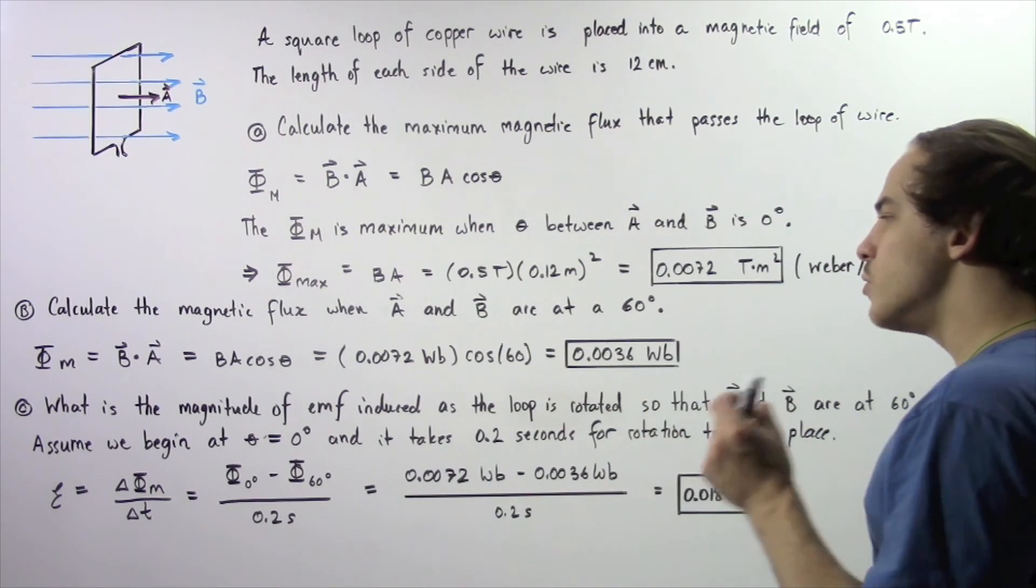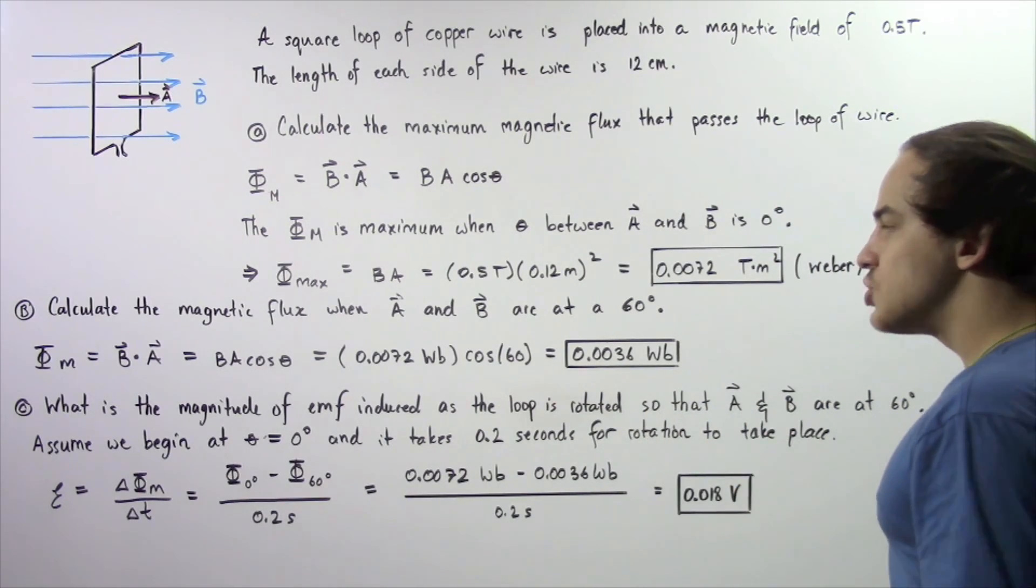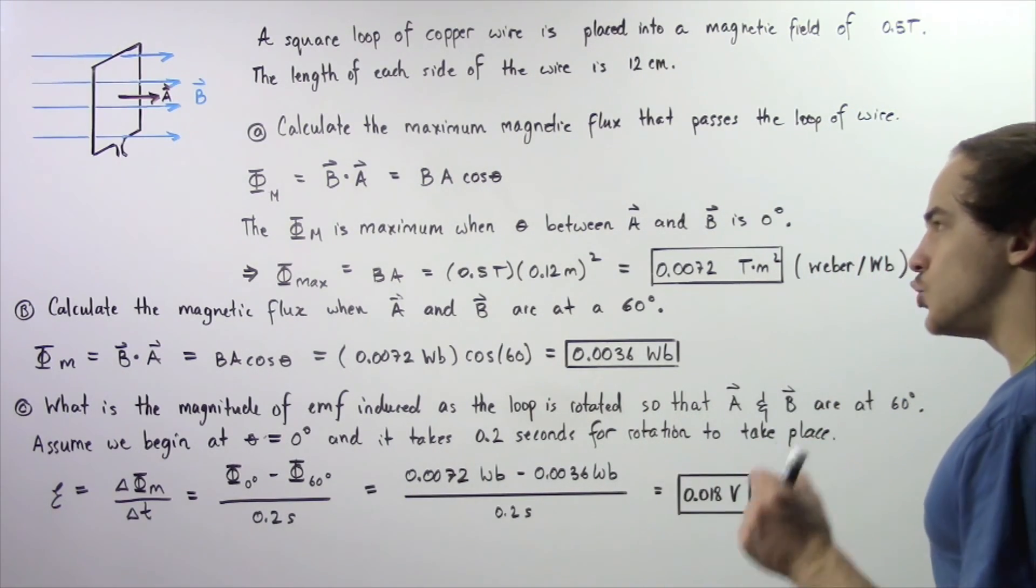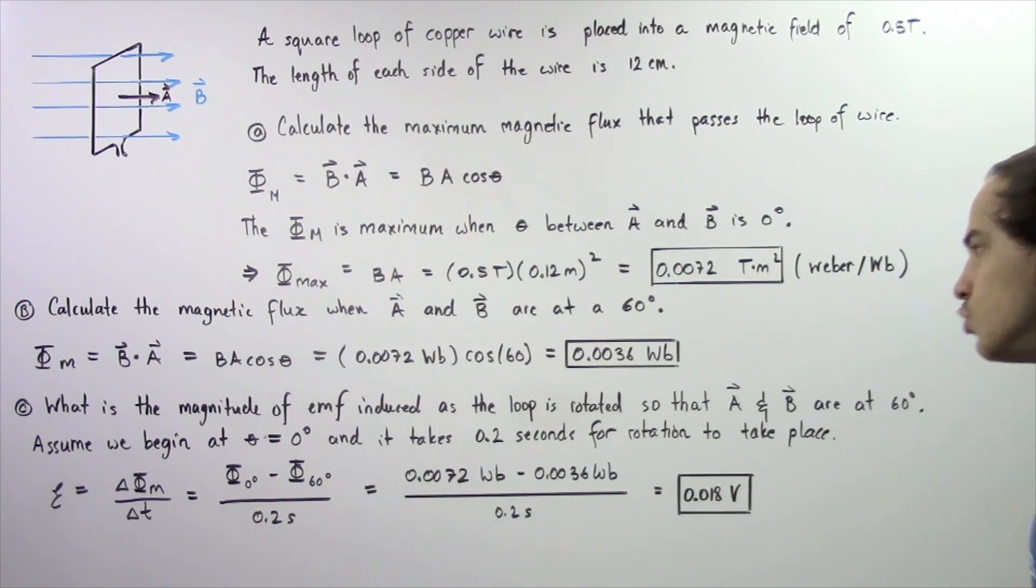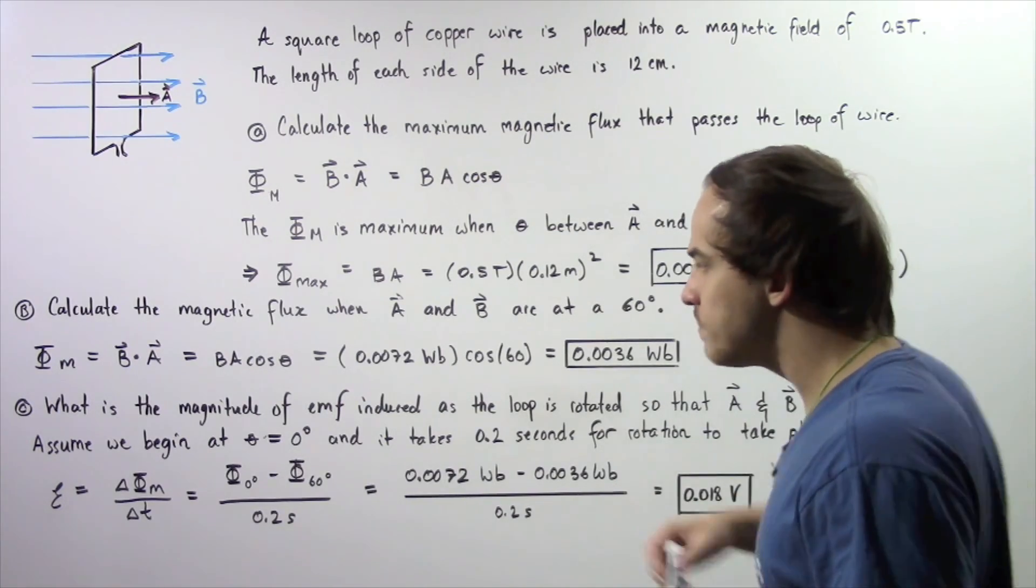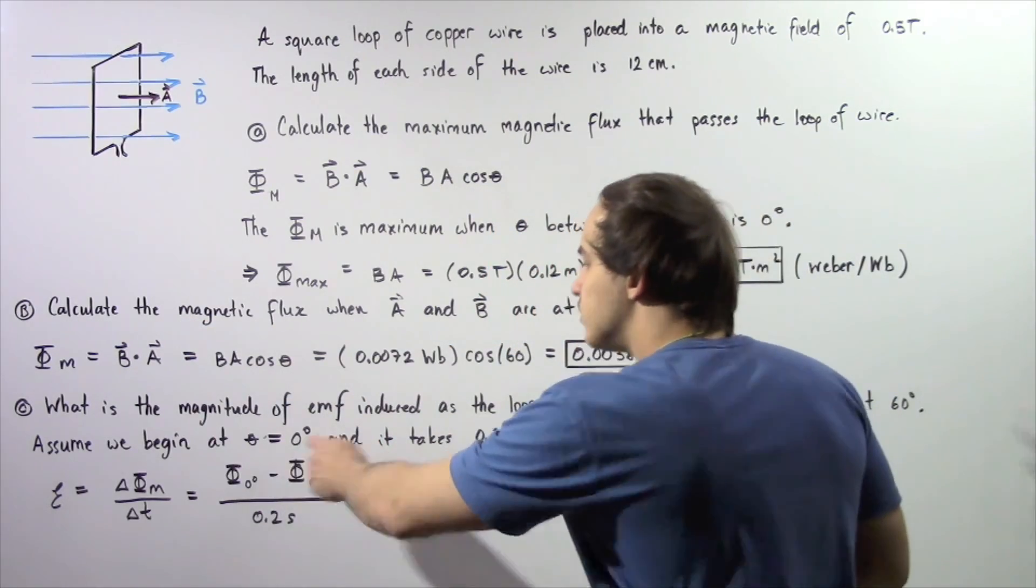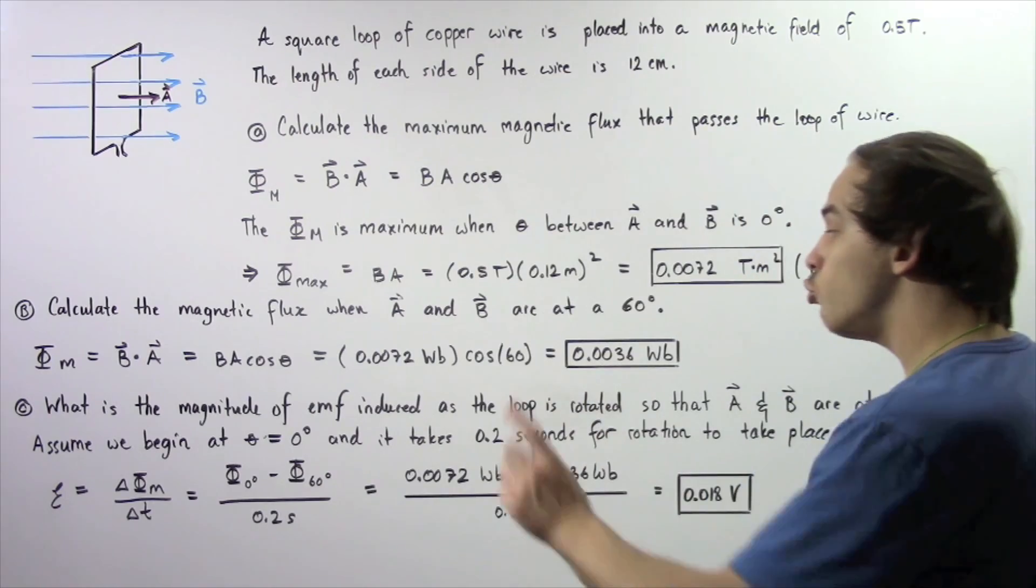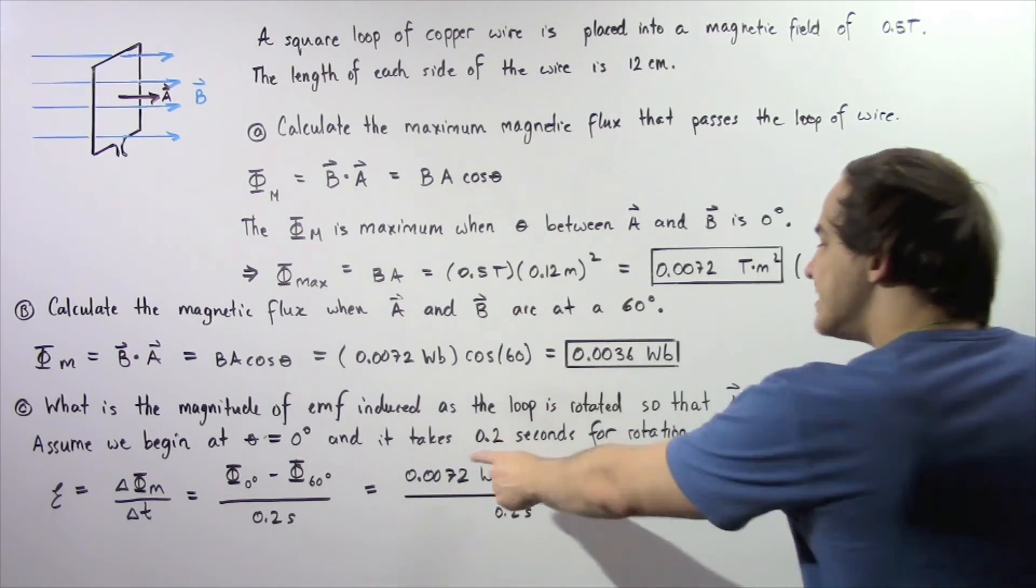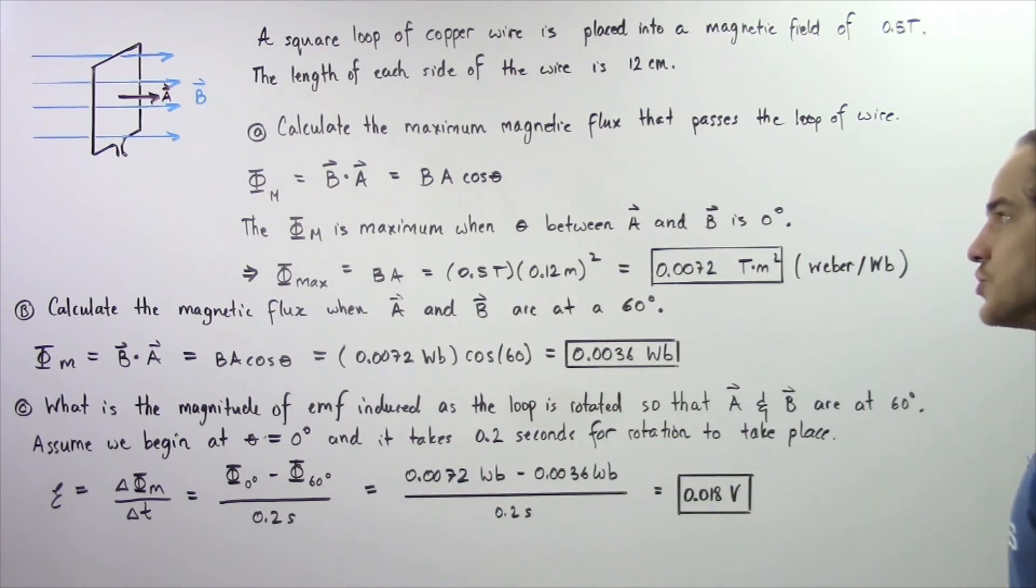Now let's move on to part C. So what is the magnitude of EMF induced as the loop is rotated so that the angle between A and B is 60 degrees? Let's assume that the initial angle that we begin at is 0 degrees between B and A, and assume that rotation takes 0.2 seconds.